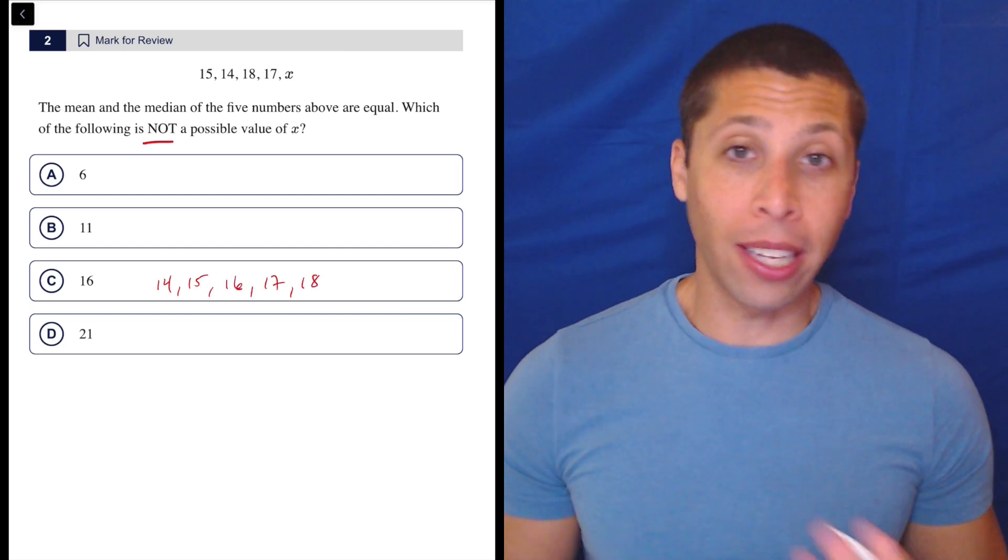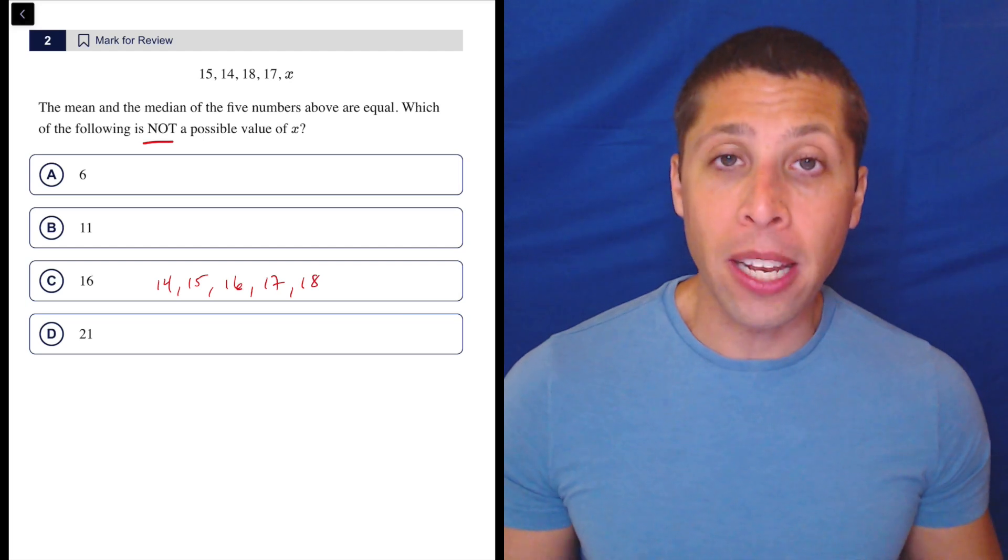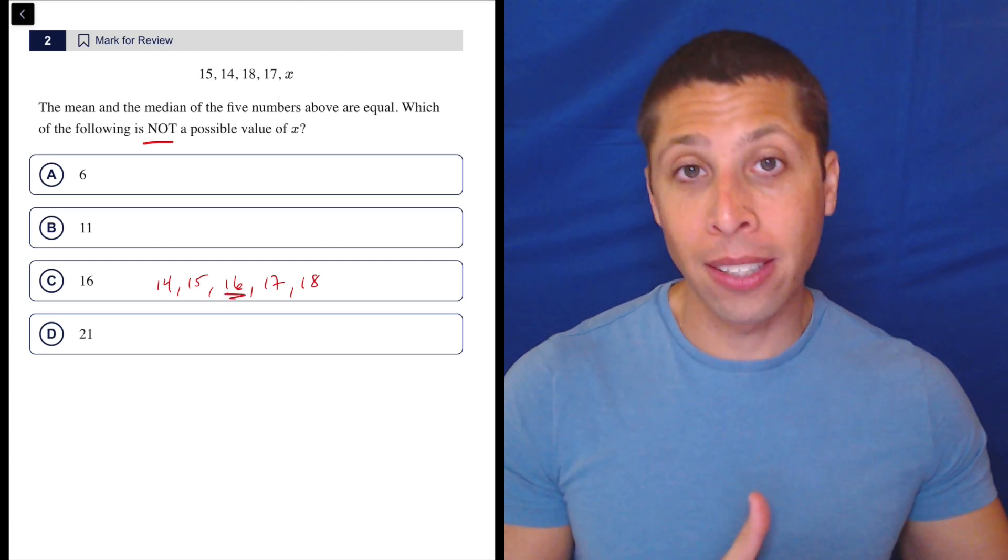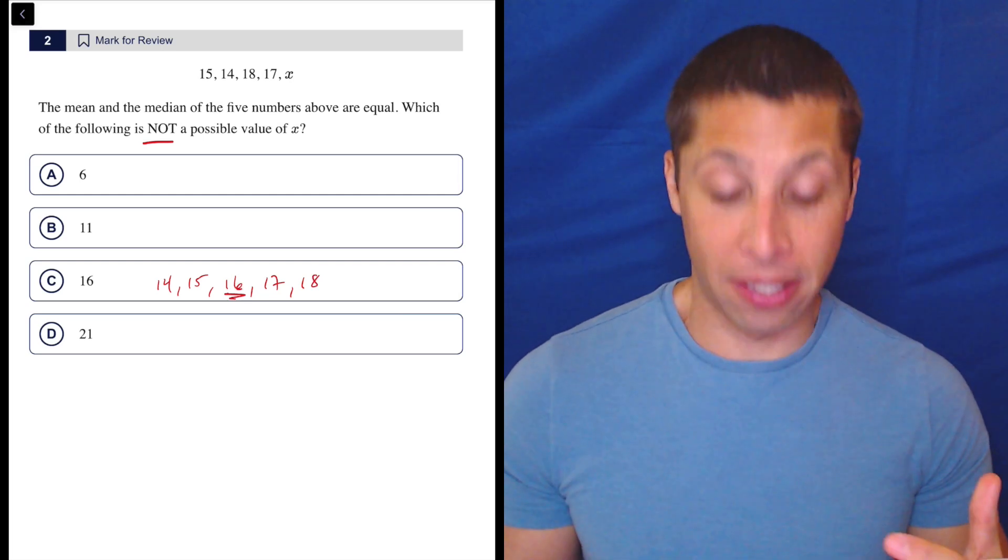Without really even doing any calculations, I can now see that the mean and the median are going to be the same. The median is just the middle number. But because this set is very well balanced, I also can tell that the mean is going to be 16.